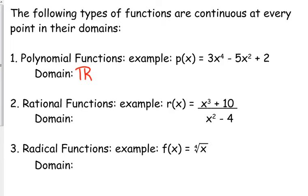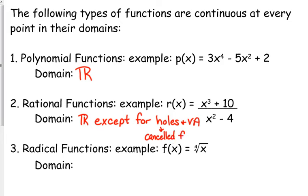Rational functions — as we mentioned working through those problems — you should think: rational functions have problems with holes and vertical asymptotes. So the domain is all real numbers except for holes and vertical asymptotes. Holes come from canceled factors; vertical asymptotes come from setting the denominator equal to zero and solving for x. If you divide by zero, that's undefined, so that value is not part of the domain. It's not continuous at holes or vertical asymptotes.